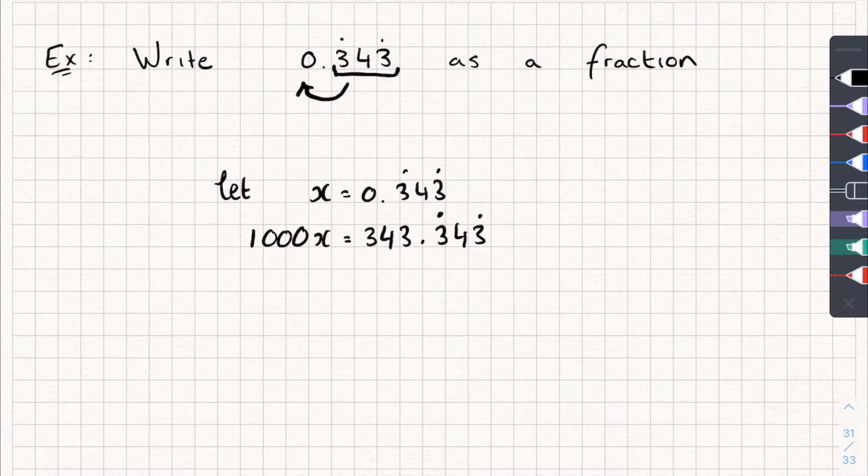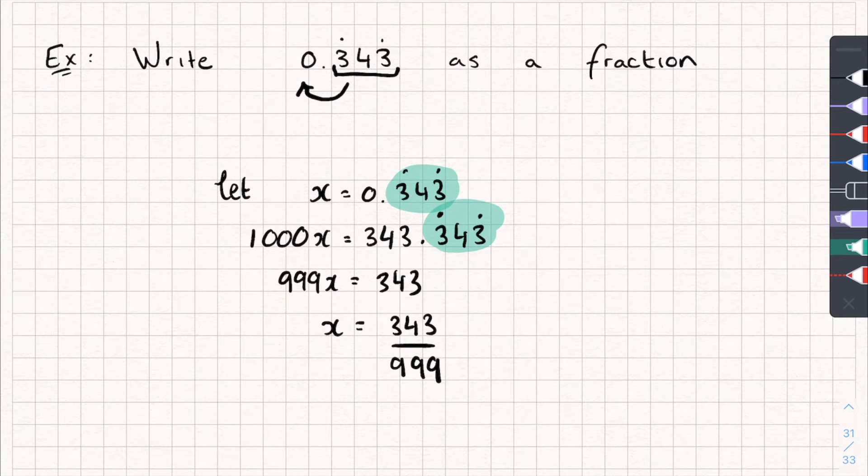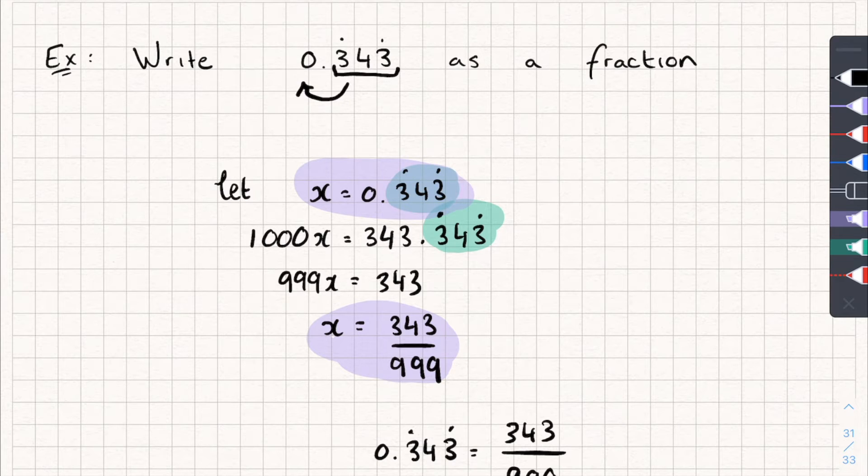And now, you'll probably see, now we can eliminate this recurring part by subtracting x from 1000x. And that gives me 999x equal to 343. I can then divide both sides by 999 to get x on its own. And I get 343 over 999 is equal to x. Which is helpful because if you look, x is equal to 0.343. And x is also equal to 343 divided by 999. So 0.343 recurring is equal to 343 divided by 999. Job done.